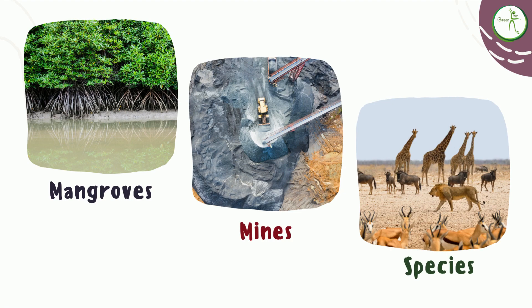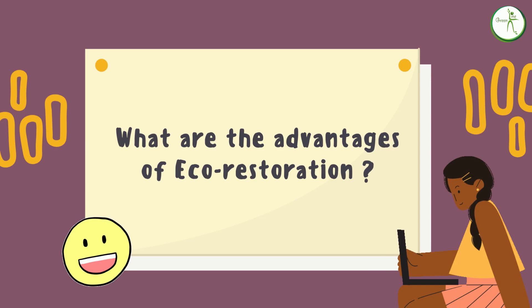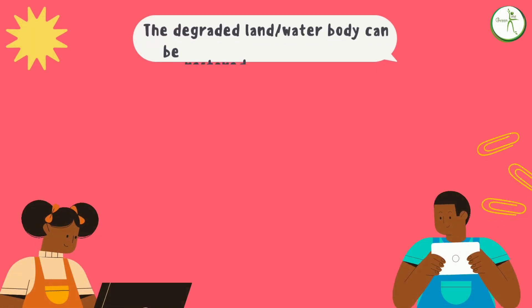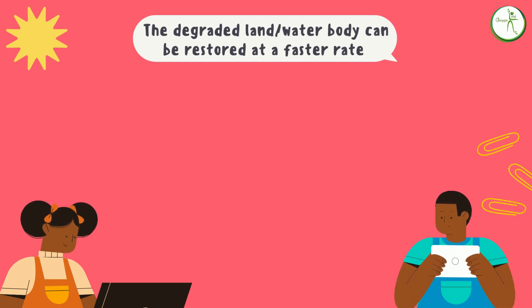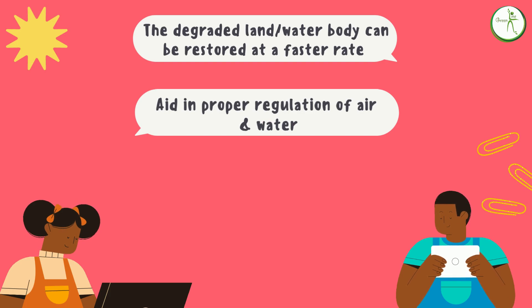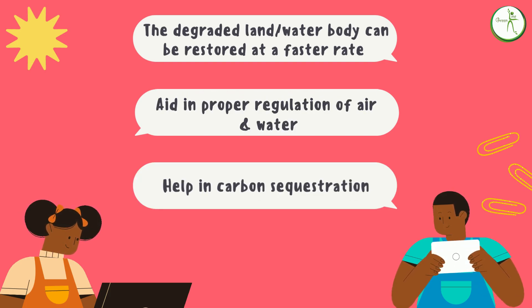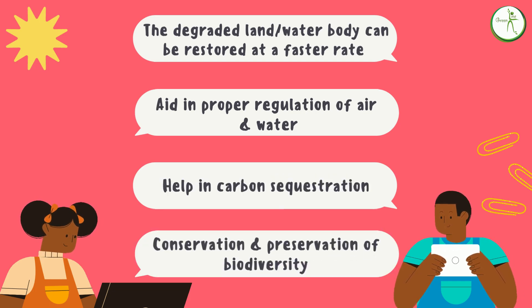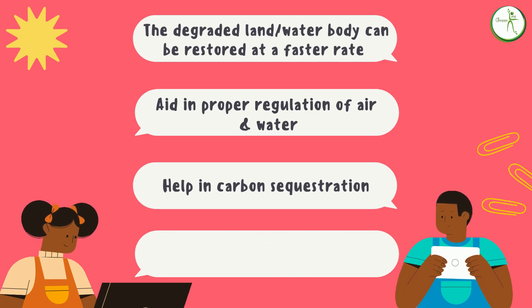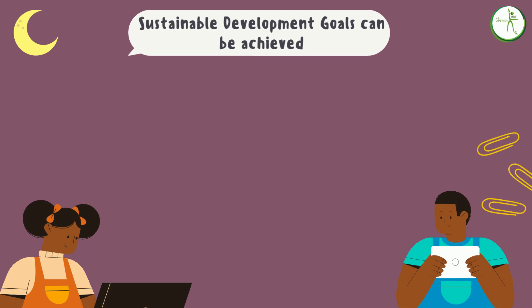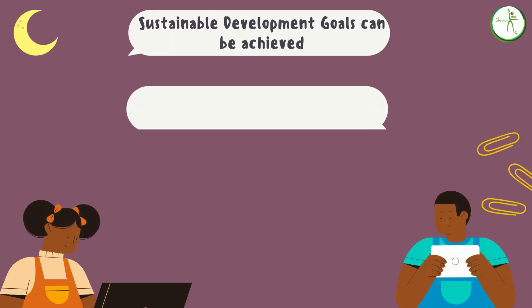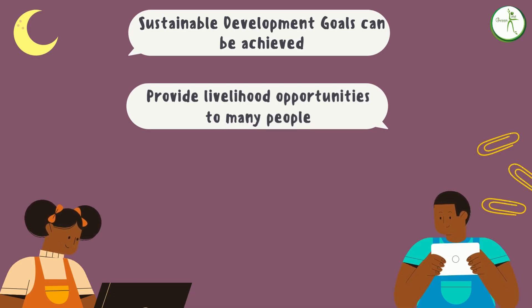I hope you have now understood what eco-restoration is and why it is important. Let's also look at some of its many advantages. Due to eco-restoration, a degraded land or water body can be restored at a faster rate. It will also aid in proper regulation of air and water. Restoring ecosystems will help in carbon sequestration, thereby helping us conserve and preserve biodiversity that is vulnerable to climate change. Via restoration, we can also achieve various sustainable development goals. Restoration will also provide livelihood opportunities to many people, safeguarding indigenous communities while using their knowledge in restoration.